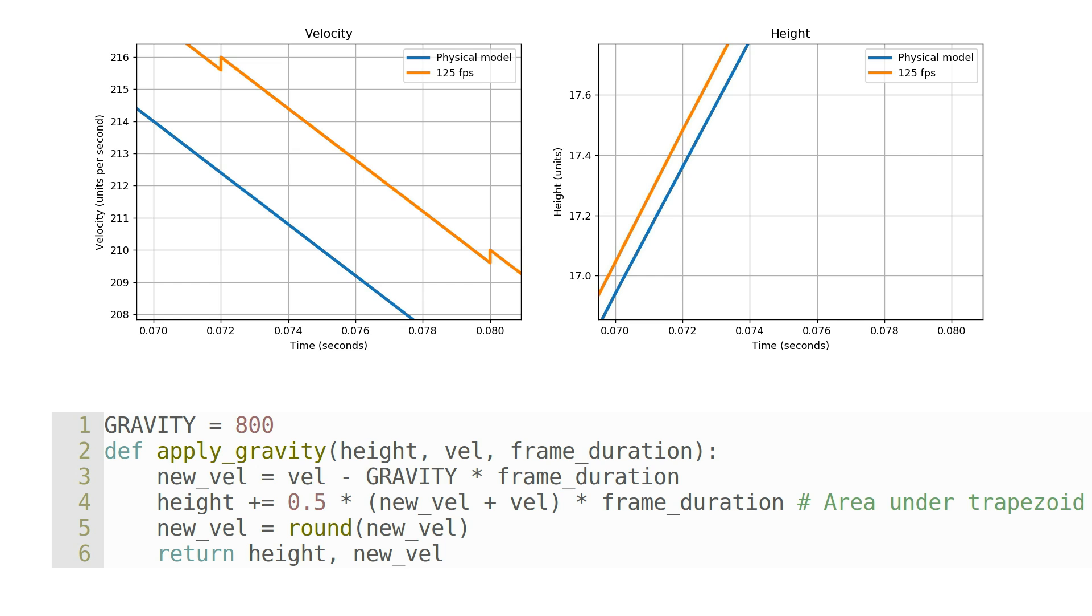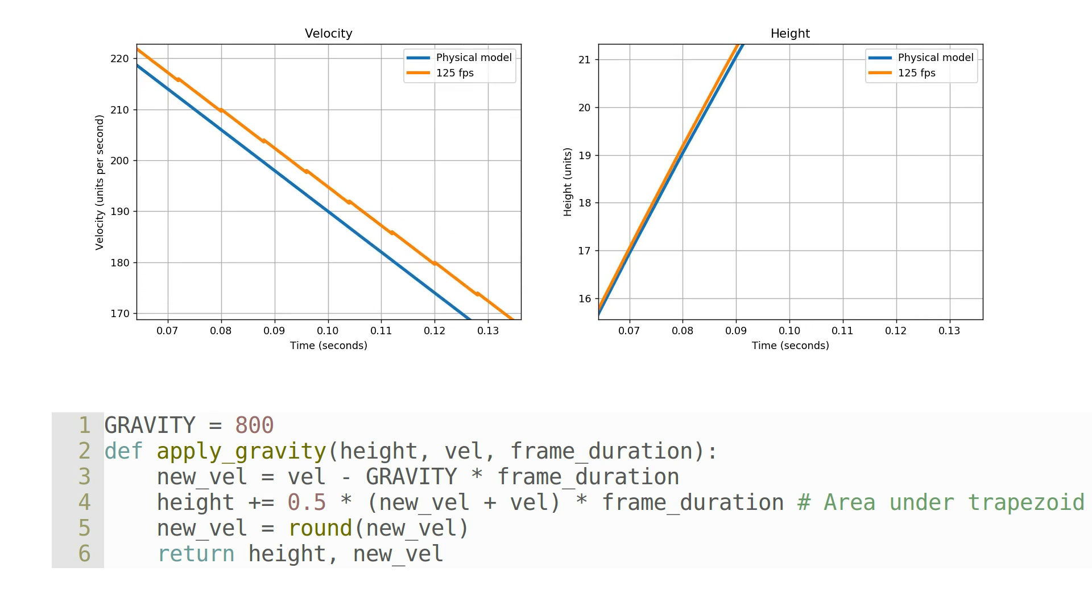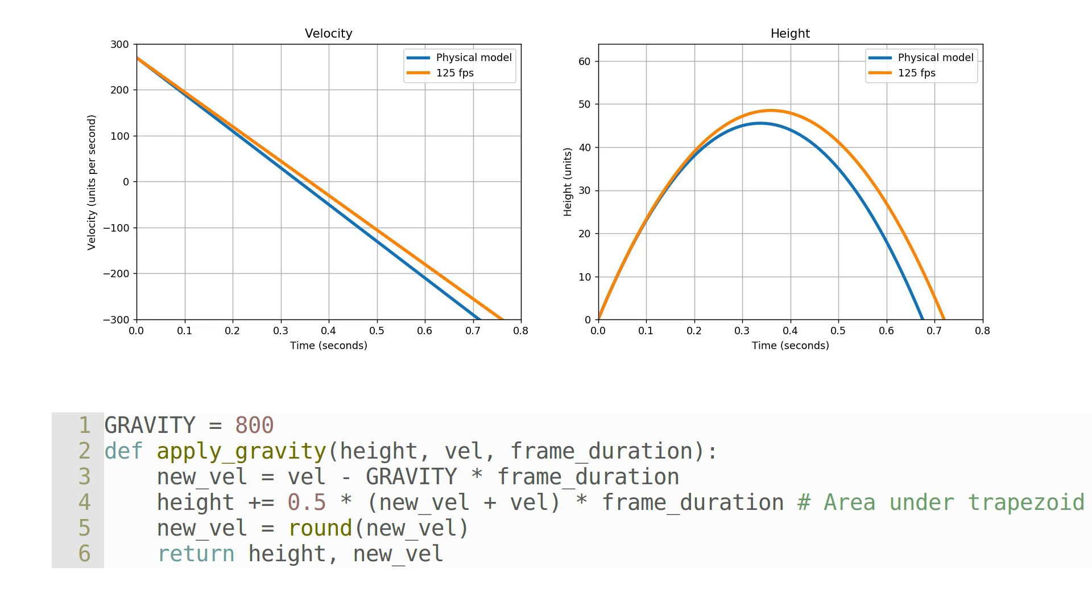This gives a higher velocity, and therefore a slightly higher height on successive iterations. Accumulated over all the frames of the jump, this difference results in a large increase in height.